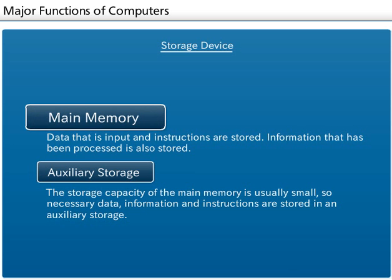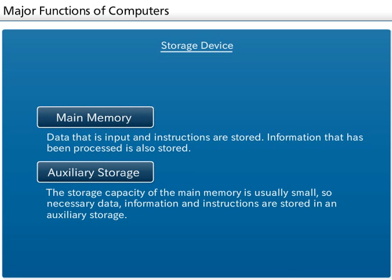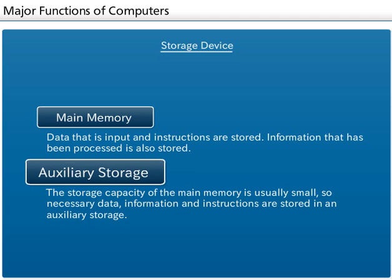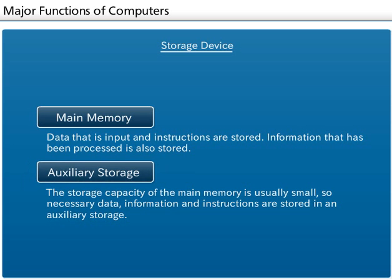Main Memory: The instructions and input data are stored in the main memory. Information is also stored here after processing. The storage capacity of the main memory is usually small, so necessary data, information, and instructions are saved and stored in an auxiliary storage.